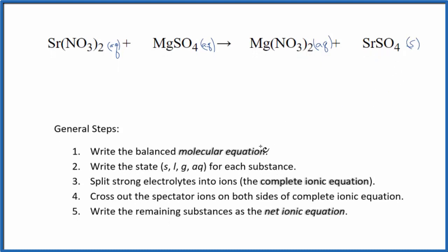We have our states now. We can split the strong electrolytes into their ions, and that'll give us the complete ionic equation. Strontium's in group 2 on the periodic table, so that'll be 2+. This whole nitrate ion is 1-. Good one to remember. So we'll have Sr2+.